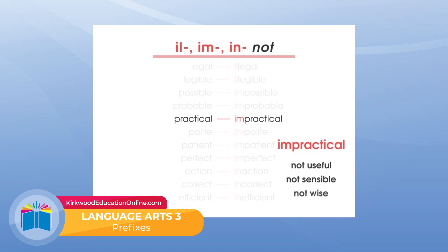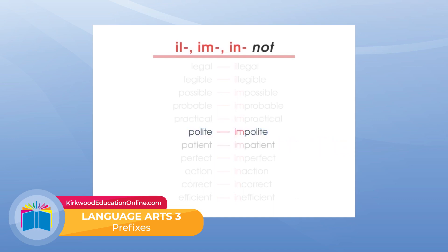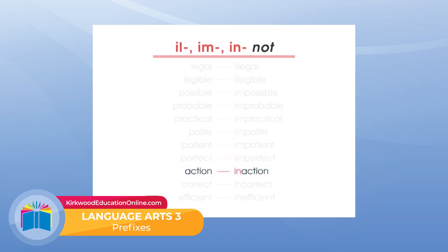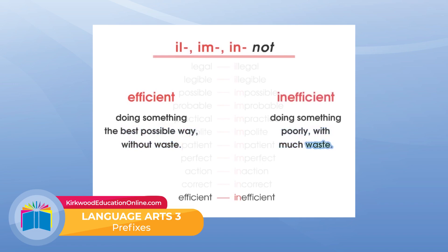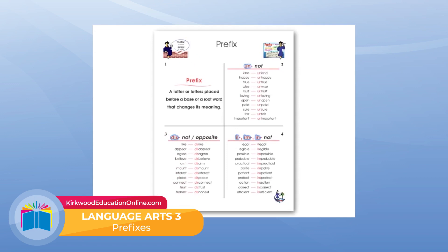'Polite.' Impolite. 'Patient.' Impatient. 'Perfect.' Imperfect. 'Action.' Inaction. 'Correct.' Incorrect. 'Efficient.' Inefficient. Efficient means performing or functioning the best possible way without waste. Inefficient means to perform poorly with much waste. That particular gasoline engine is very inefficient — it uses and wastes a lot of gasoline. All of these prefixes coming before a base or root word change its meaning to the opposite, to 'not.'